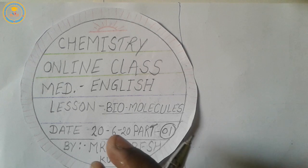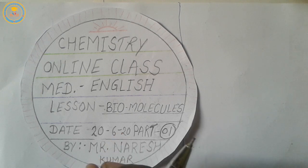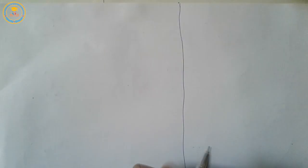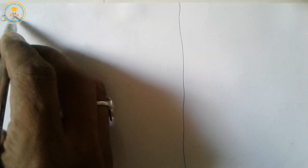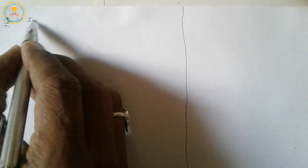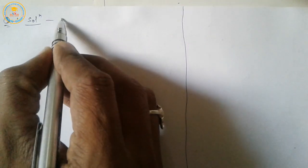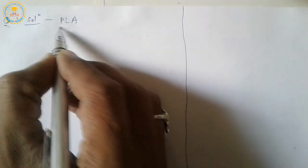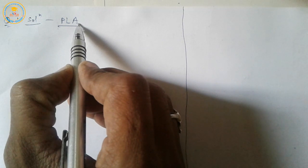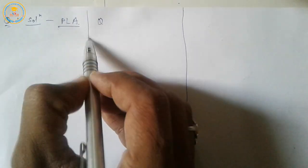Now we take homework questions. The question was: which polymer is used in formation of bioplastic? The solution is PLA, meaning polylactic acid.